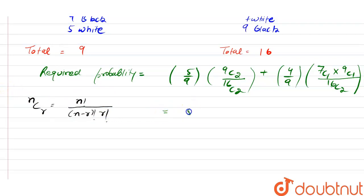After solving this, we have 5 by 9 into 9 into 8 divided by 16C2. After solving, we have 16 into 15. Plus, from here, we have 4 by 9. We know that 7C1 after solving is 7, 9C1 after solving is 9, and that will be divided by 16C2, which is 8 into 15.